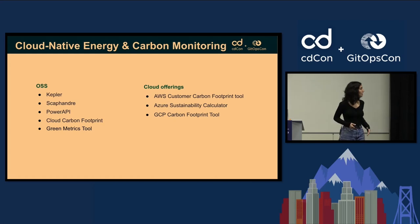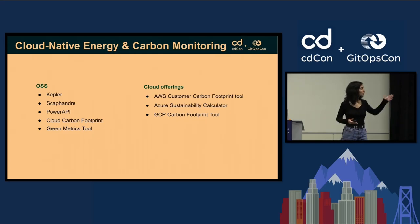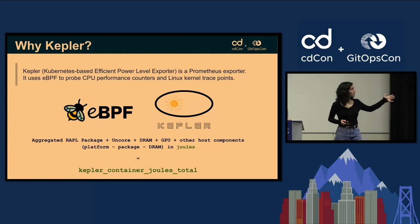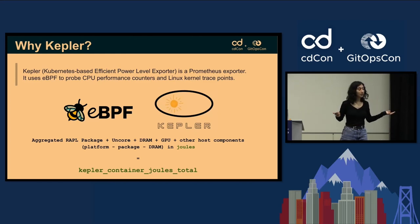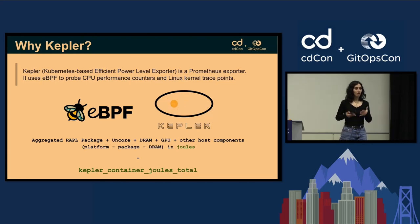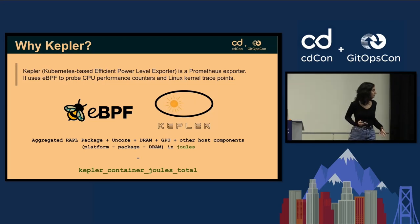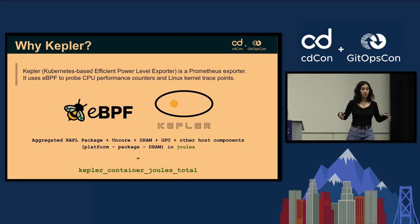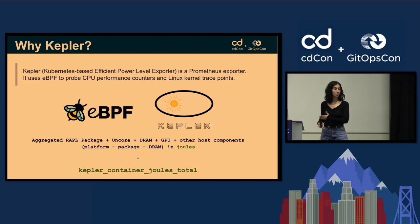On the open source side, there's still a lot of guesstimating. But Kepler is what we're going to look at today. It's an eBPF-based tool — Kepler stands for Kubernetes-based Efficient Power Level Exporter — and it's a great acronym. It's a Prometheus exporter that looks at your kernel syscalls, which is the eBPF part, and uses RAPL for energy data aggregation along with other kernel components to aggregate everything and provide energy consumption in joules.